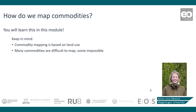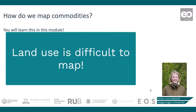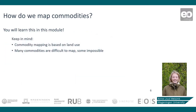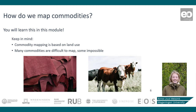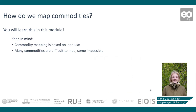Also be aware that land use is generally difficult to map, as it requires expert interpretation. Some commodities are even impossible to map directly from land use. For example, products such as leather and beef cannot be mapped directly, although their production areas may be derived from livestock grazing. At the end of this tutorial, you will be an expert on commodity mapping, ready to do some interpretation. Good luck!